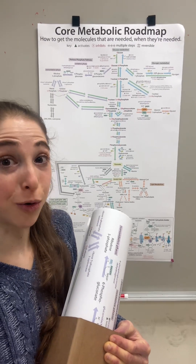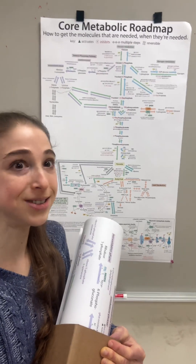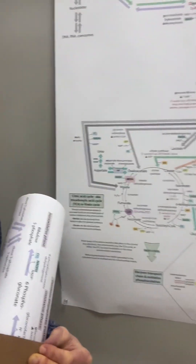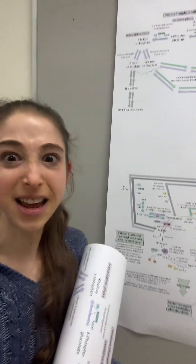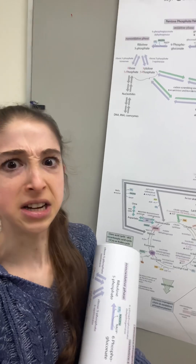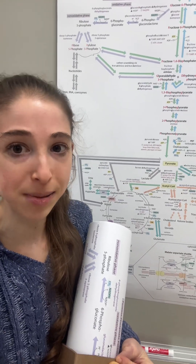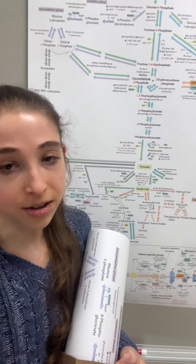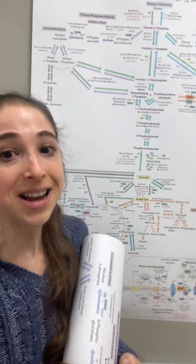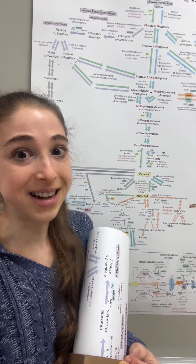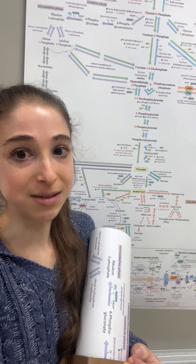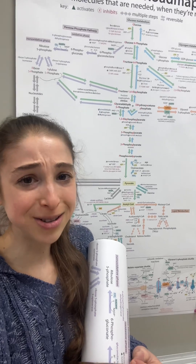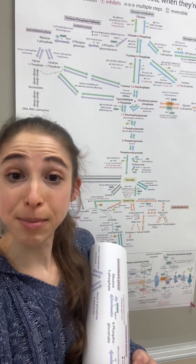I'm super excited that my updated Core Metabolic Roadmap posters came in to give to my students. I wish that I decided ahead of time that I wanted to add things like malic enzyme and the various NADH and FADH2 equivalent electron shuttles that take those electrons from the cytoplasm and into the mitochondria to be used to make ATP — but they're there now. The good thing is that the PDF version is updated too, and you can go ahead and print out your own. Feel free to use them, just be sure to please cite the Bumbling Biochemist if you do.